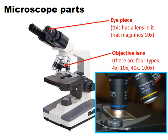The objective lenses have colored bands on them. The red band indicates the four times objective, the yellow band illustrates the ten times objective lens, and the thin blue line represents the forty times objective lens. In the picture on the right-hand side, the scientist is using the forty times objective lens.